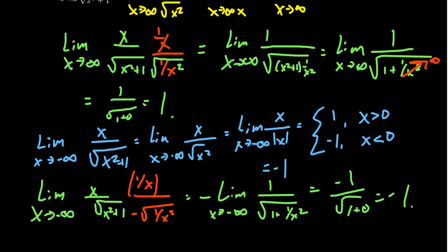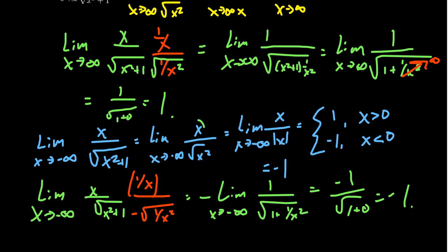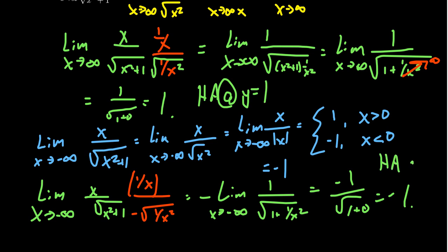Whether you use the formal approach or just look at dominant terms, you have to pay very close attention to the sign of the square root as you approach negative infinity — that sign can throw you off significantly. Notice that this function has a horizontal asymptote at y equals one as x goes to positive infinity, and a horizontal asymptote at y equals negative one as x goes to negative infinity. Having two different horizontal asymptotes is quite typical of rational expressions involving square roots.